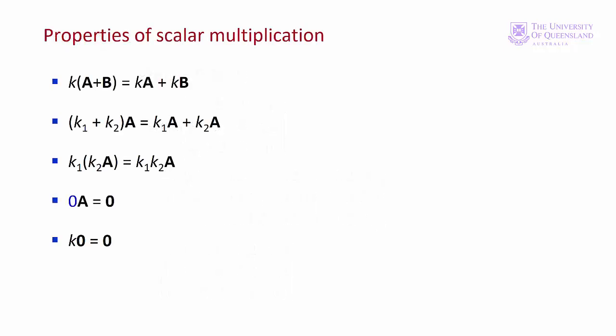We have some properties of scalar multiplication. We have the distributive property. If we multiply the sum of two matrices A plus B by K, that's equal to KA plus KB. If we have two scalars, K1 and K2, add them up and multiply matrix A by that combined factor. That's the same as K1A plus K2A. We have the associative property of multiplication. We could also put brackets around K1 and K2. So multiply those together first and multiply A.